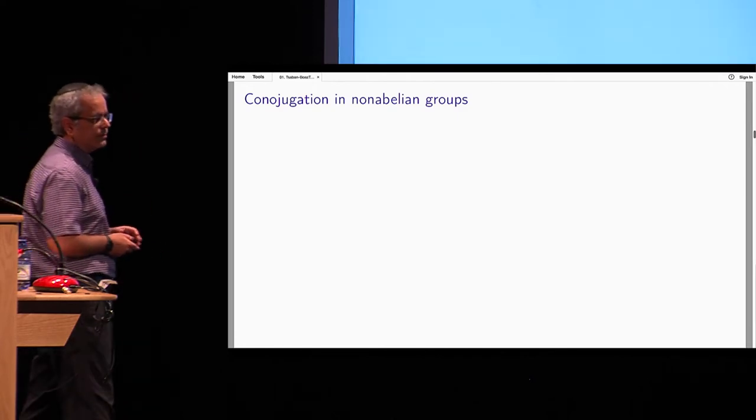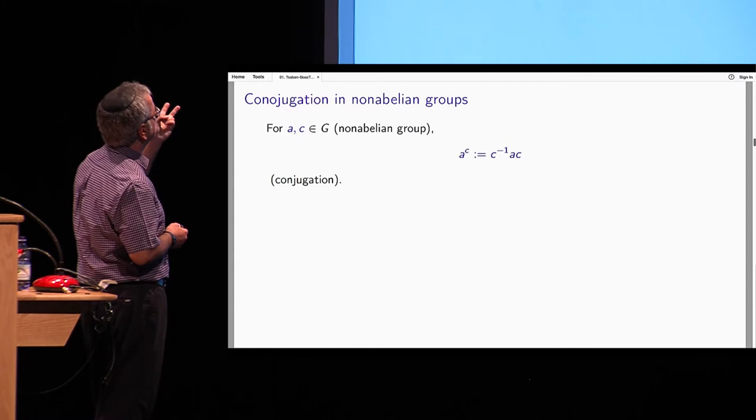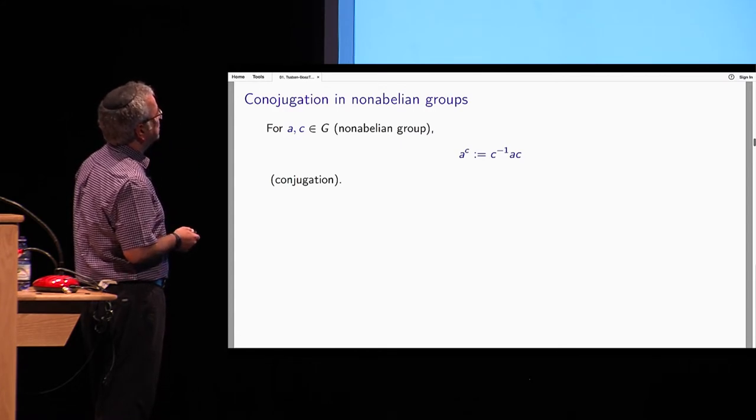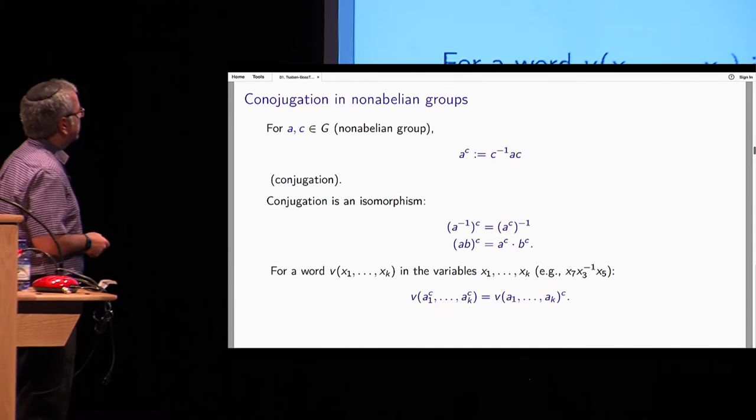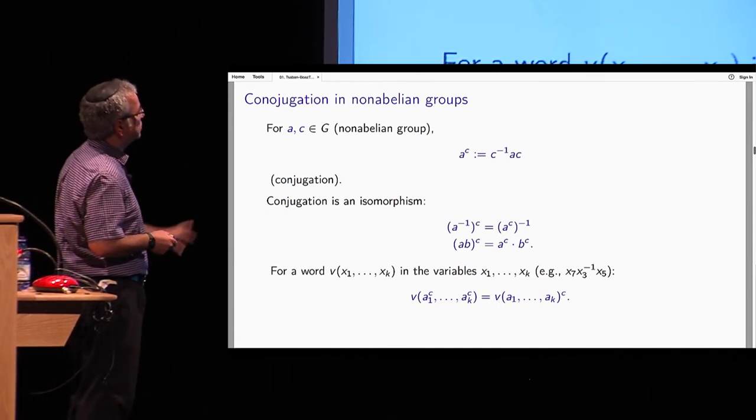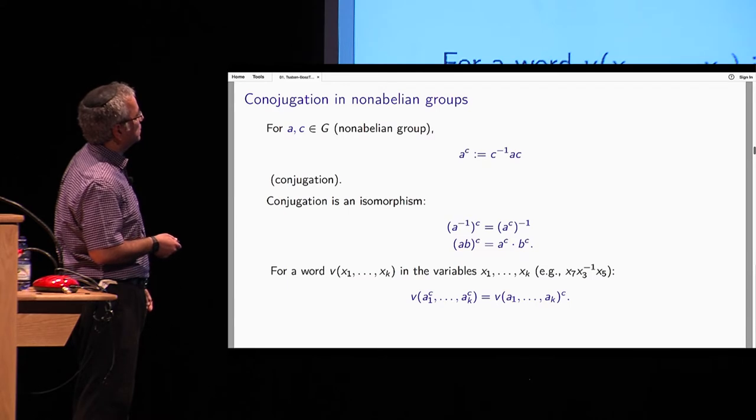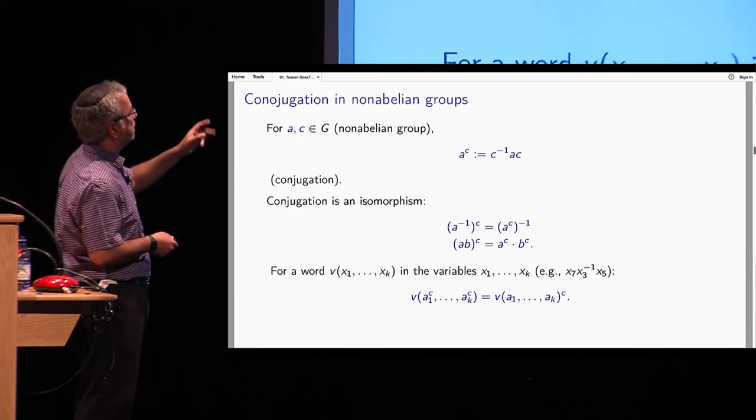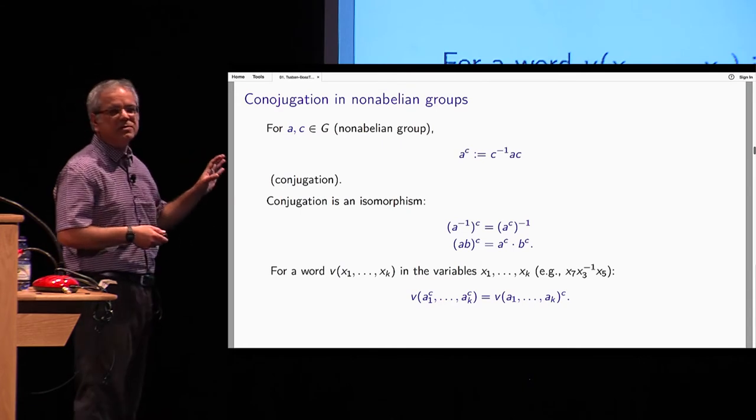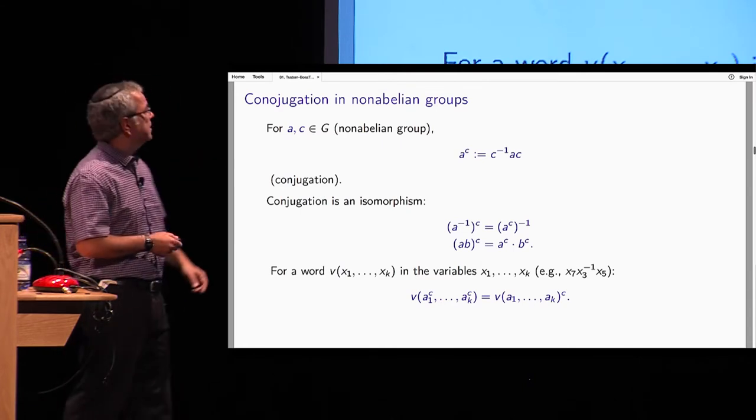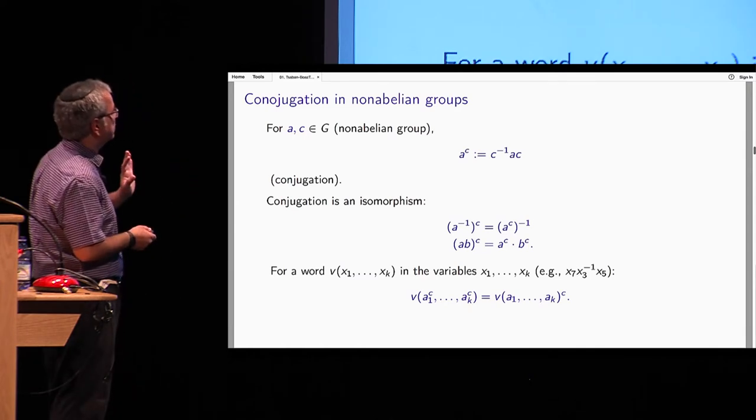So if you want to test whether you can use non-abelian groups for cryptography, you also need the good general cryptanalytic tools to assess the security of such proposals. So here we will talk about a general cryptanalytic method that I introduced. First, I call it algebraic span cryptanalysis. You will see why later. This method was able to cryptanalyze in a very convincing way essentially all classic proposals for non-abelian group cryptography or key exchange protocols. So first, let us talk about conjugation in non-abelian groups.